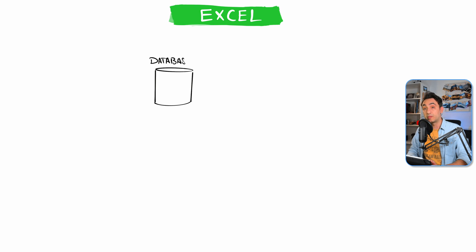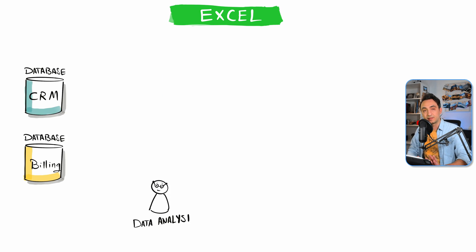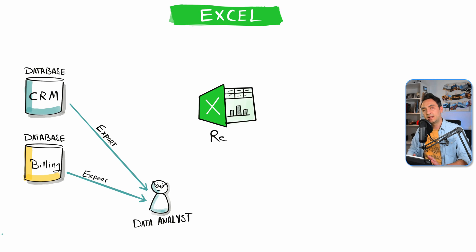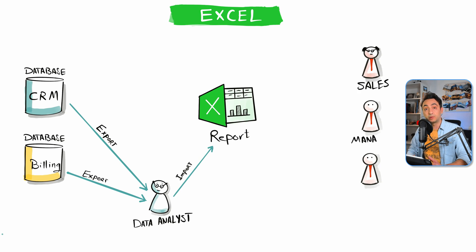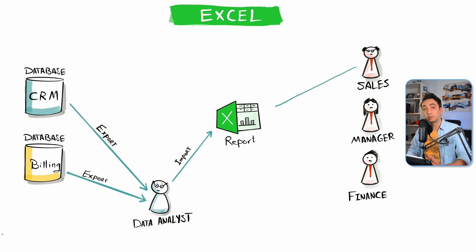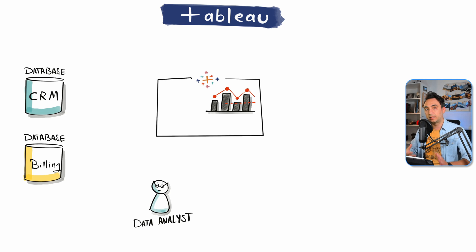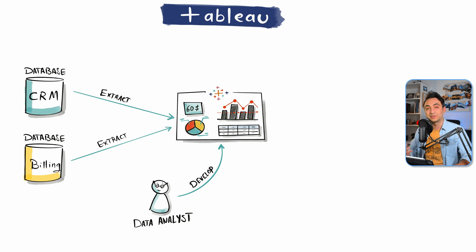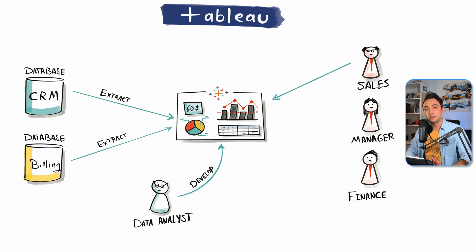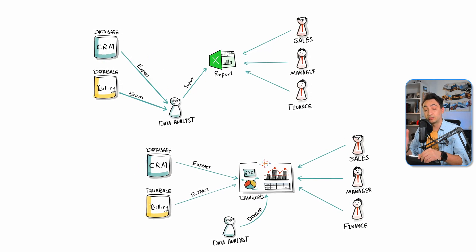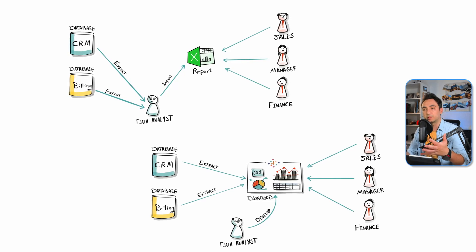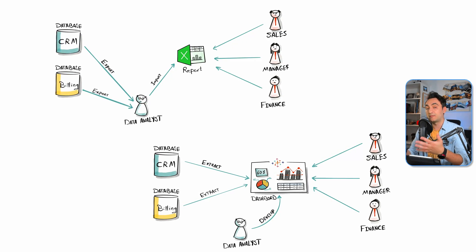Let me show you how BI is done with Excel. We usually have different source systems, and data analysts manually export data from those systems, import them into Excel, do calculations, and generate a report. Those Excel files are then accessed by different business users. On the other hand, with a modern tool like Tableau, we connect directly to those source systems, develop reports or dashboards in Tableau, and business users access Tableau to see those dashboards. Both look similar on the surface, so let's dive in to show the real benefits.